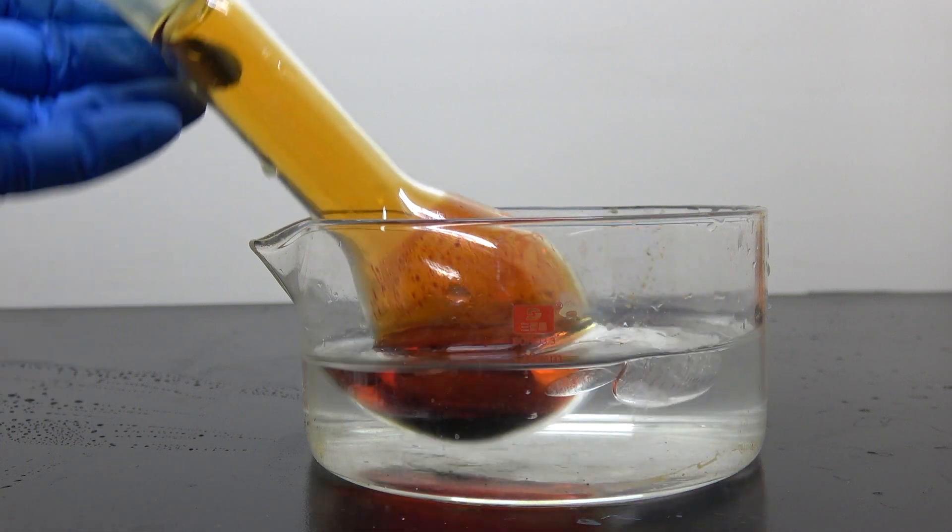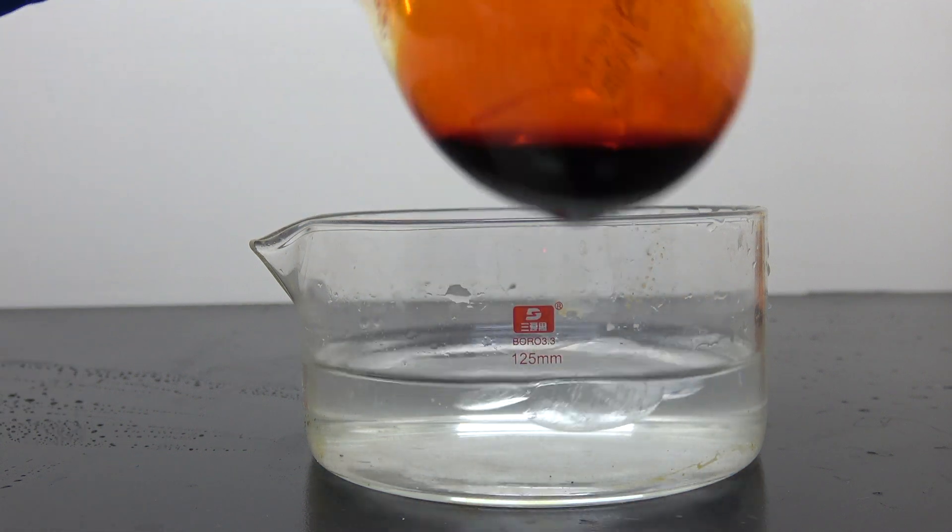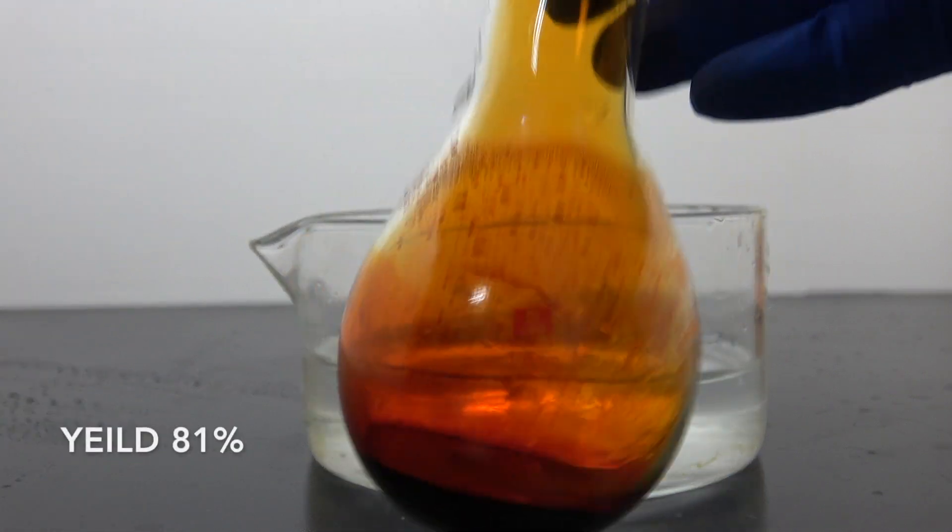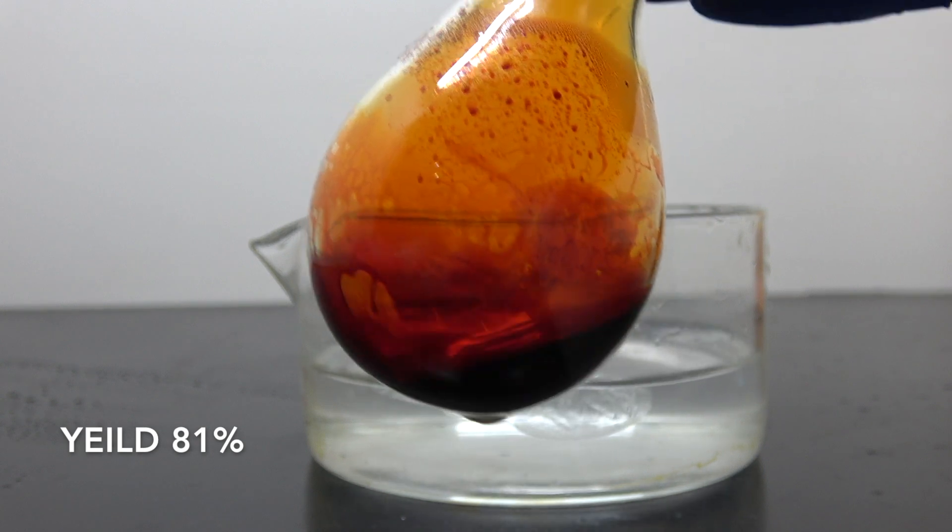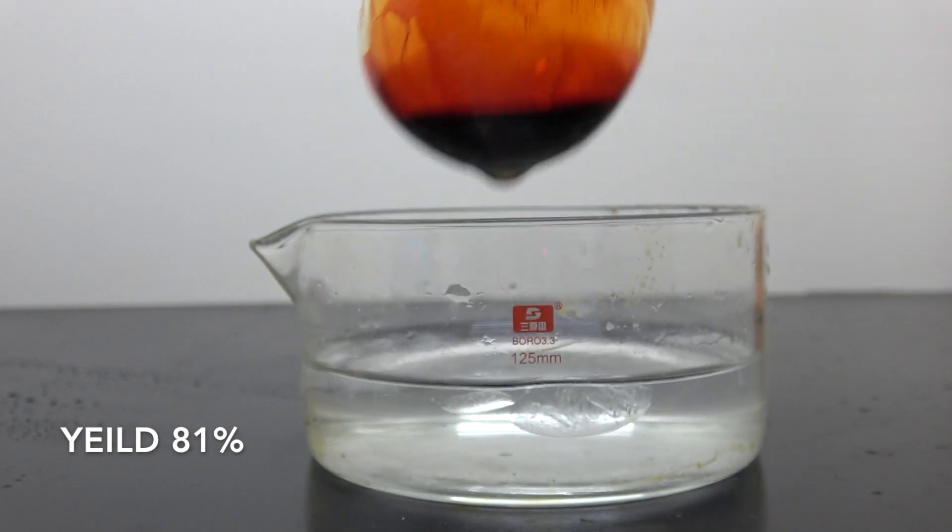Here is the final product, about 20 ml of elemental bromine. This represents about 81% yield according to sodium bromide.